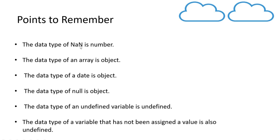The first exception is that NaN has a data type of number. We already saw this when discussing data types in JavaScript — NaN, Infinity, and negative Infinity are special symbols in the number type. Next, the data type of an array is object, and the data type of a Date is also object. Importantly, the data type of null is object, which is actually a bug in JavaScript present since its early days and unlikely to be fixed.